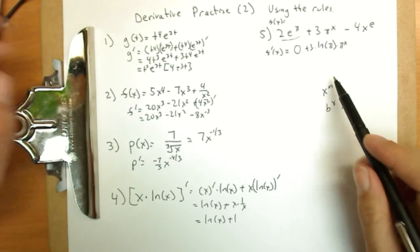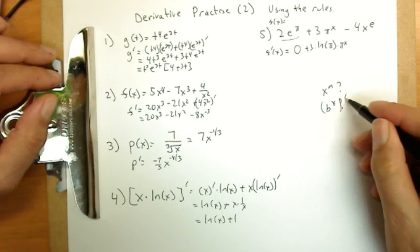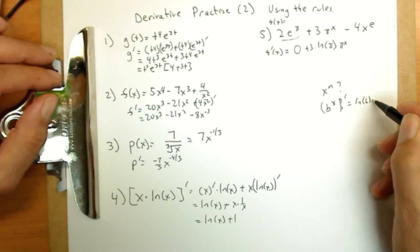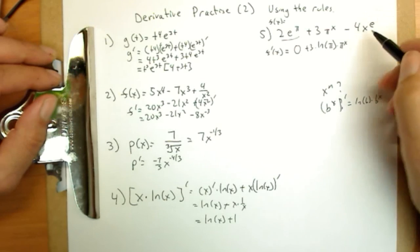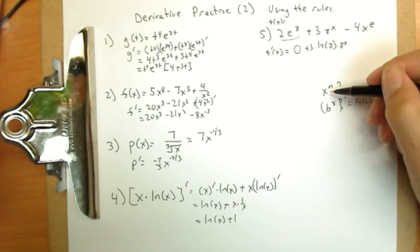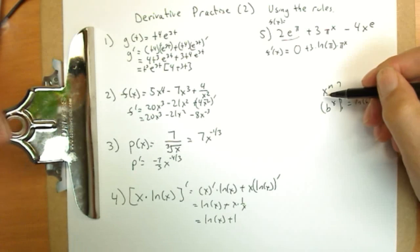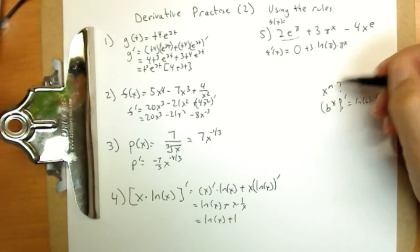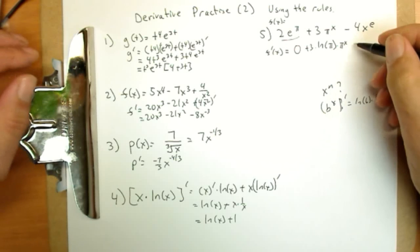If that's confusing, look back for your rule for b to the x, the derivative of which is natural log of b times b to the x. Minus 4x to the e. This is like our well-known, and often we use it so much, x to the n. So the n comes out in front and we subtract 1.